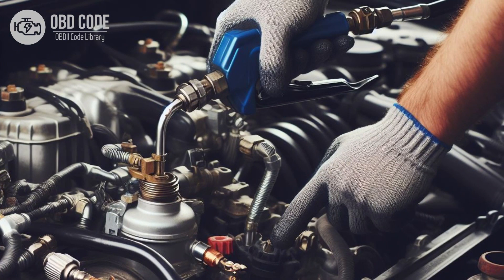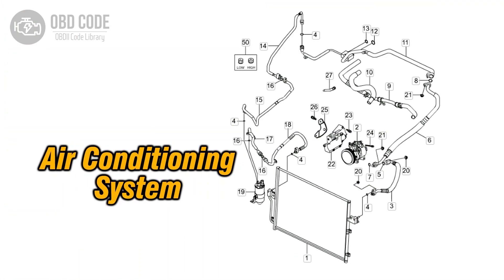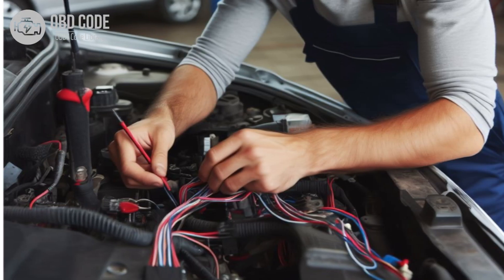3. Check the refrigerant level in the air conditioning system to ensure it is within the recommended range. Add refrigerant if necessary and check for leaks. 4. Inspect the AC system for any restrictions or blockages that could be causing excessive refrigerant pressure. Clear any obstructions and repair the system as needed.